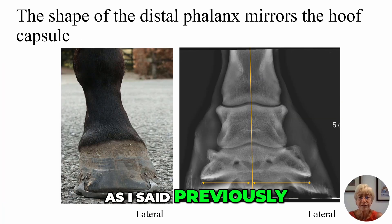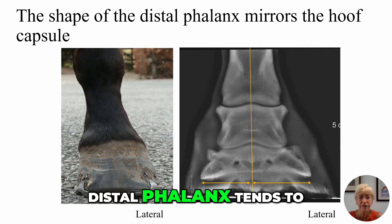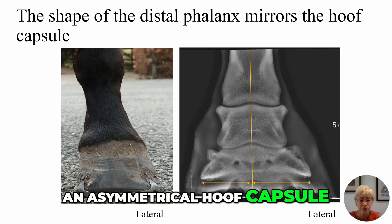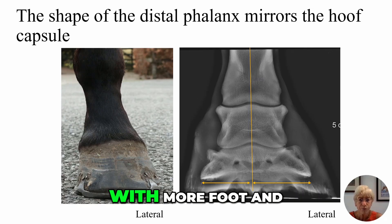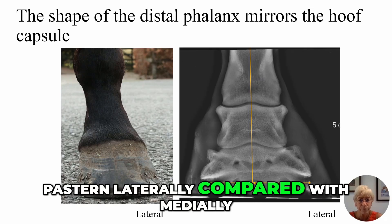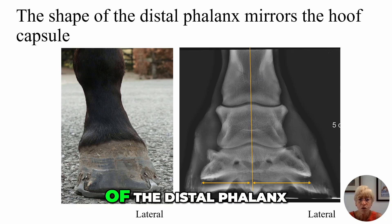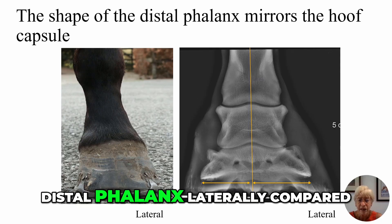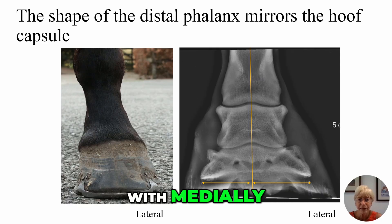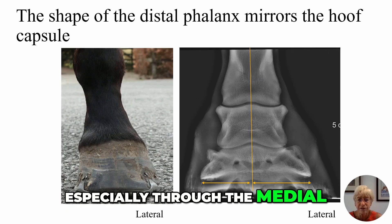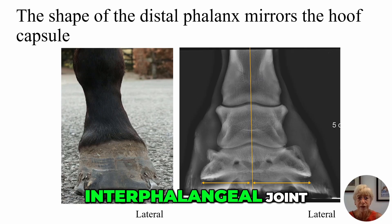The shape of the distal phalanx tends to mirror the hoof capsule. So if we have an asymmetrical hoof capsule, as seen on the left, with more foot and pastern laterally compared with medially, this is also reflected by the shape of the distal phalanx — we have a greater width of the distal phalanx laterally compared with medially. This is going to affect the loads transmitted, especially through the medial aspect of the distal interphalangeal joint.